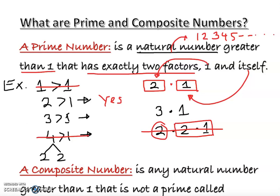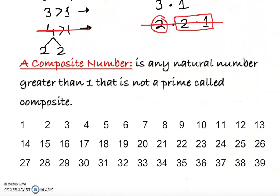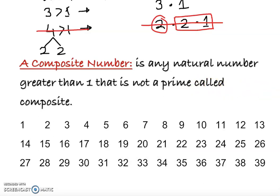What is a composite number? A composite number is a natural number greater than one that is not a prime number. Another way to say it: a natural number that is divisible by a number other than itself and one. For example, four is divisible by two. Whereas three is only divisible by three and one, so it's prime.